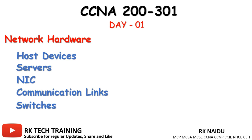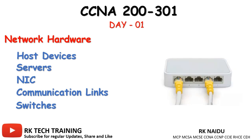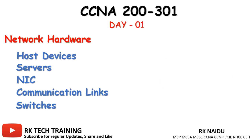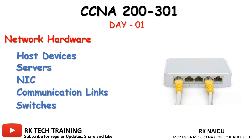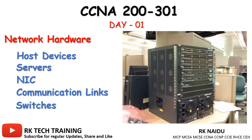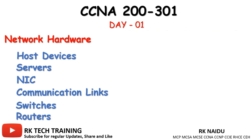Switches: on a local network we typically use switches to connect computers and servers to the network, allowing them to communicate with each other. These switches can be as small as the one you might find at your home or small office, or in a large enterprise network you might find big switches that offer hundreds of connections for computers and servers.